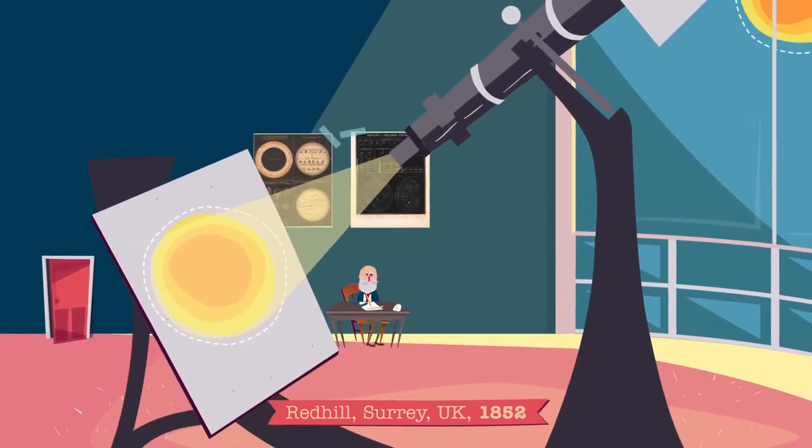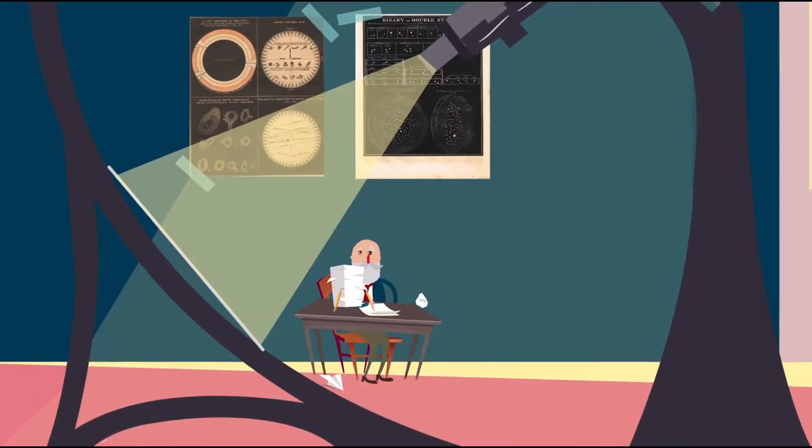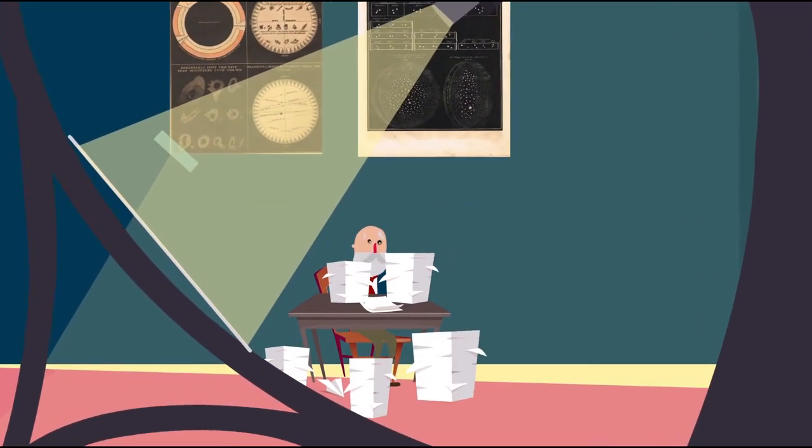Con ese telescopio, durante siete años y medio, Carrington acumuló más de 5.000 observaciones de manchas solares.